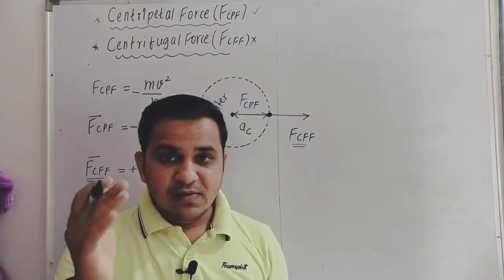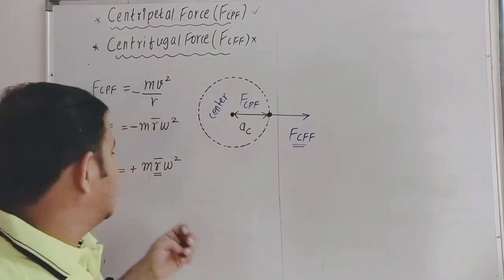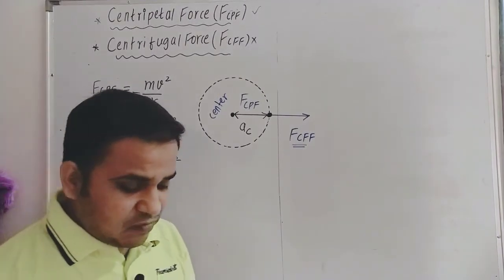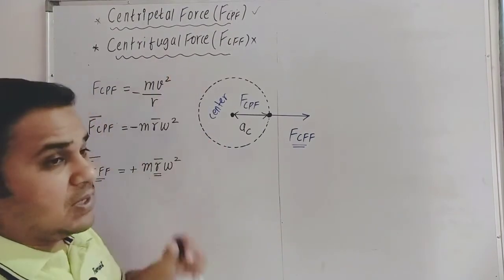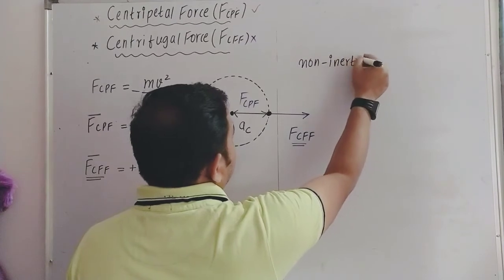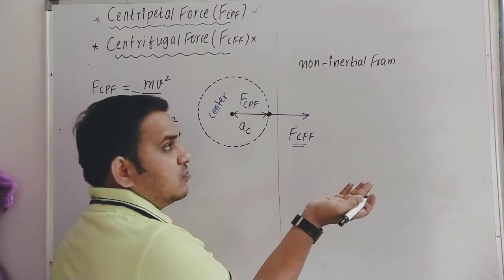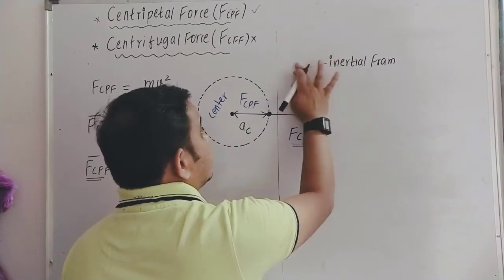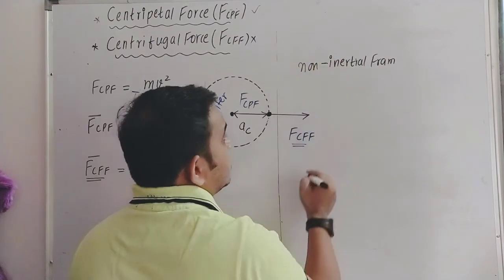So from centrifugal force you get two points: first, it is a force along the radius directed away from the center; second, formula Fcff = +m·r̄·ω². Now, centripetal force arises in the inertial frame, so centrifugal force — being exactly opposite — arises in the non-inertial frame of reference.